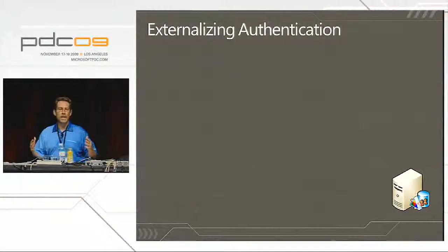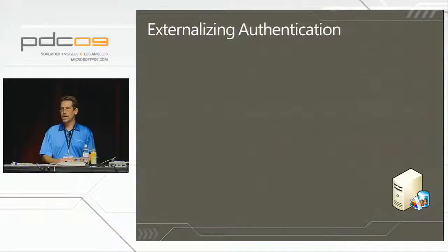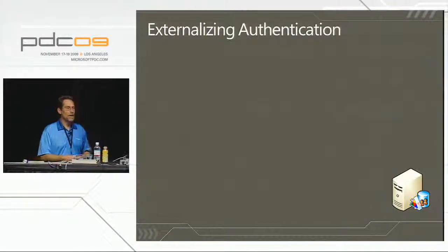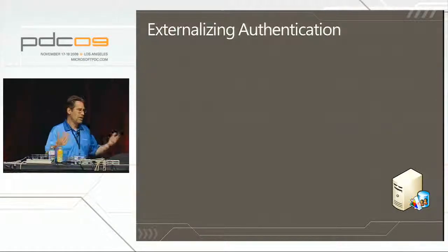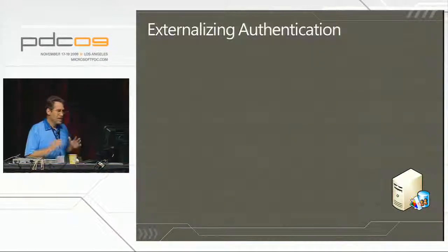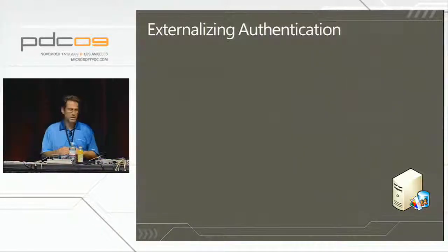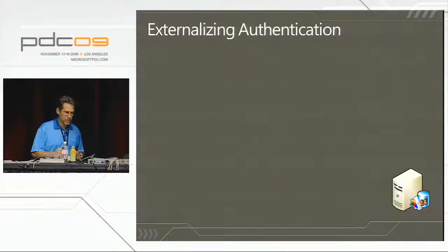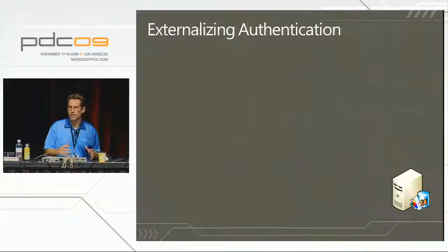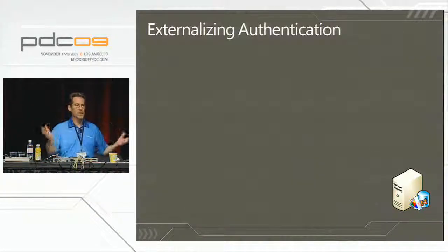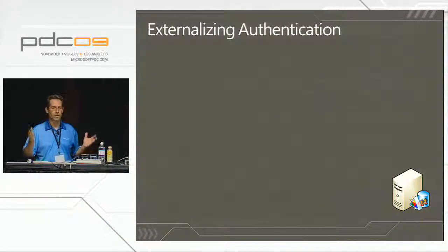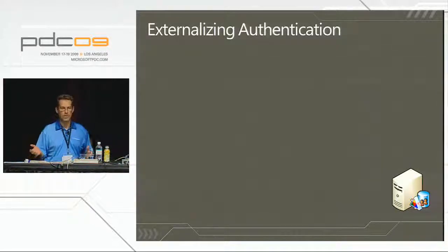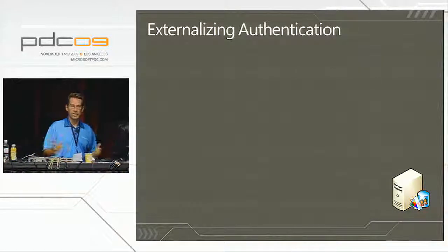There are a couple of things we push when we talk about our identity story. The first is externalizing authentication — take authentication out of your application and let some single server somewhere worry about that problem. Give administrators and IT pro staff one place to think about accounts: adding new accounts, provisioning them, setting permissions, and removing them when needed.